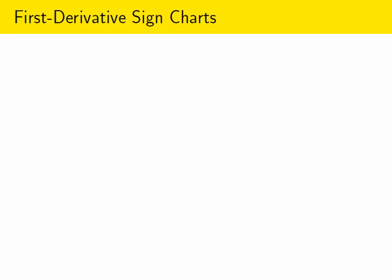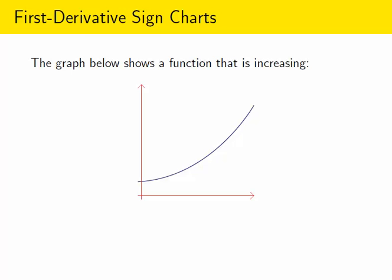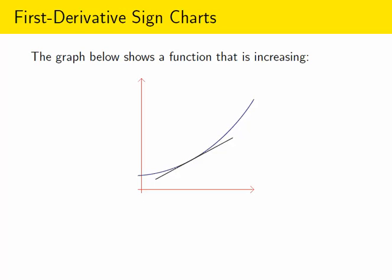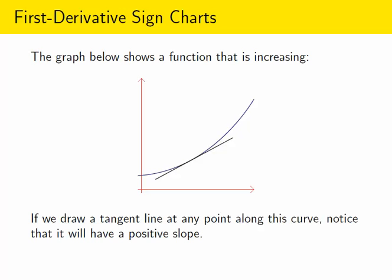In this video we're going to look at a method for finding where a function is increasing and where it is decreasing by examining its derivative. If we draw a tangent line at any point along an increasing function, the tangent line will have a positive slope, and the slope of the tangent line is given by the derivative. That means the derivative would be positive anywhere the function is increasing.